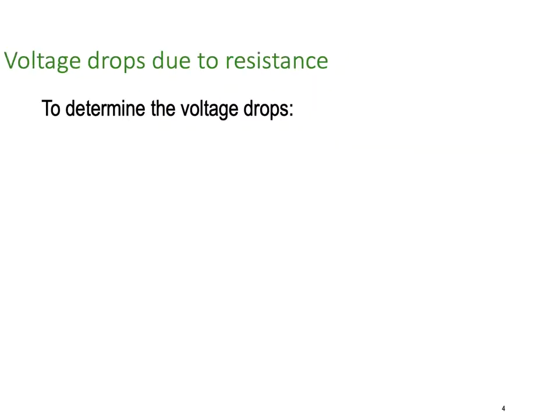Let's determine some of the voltage drops. To find the load current, assuming the voltage across the load is 400 volts, we use power equals volts times current. Our answer comes out at 100 amps because we simply take the power - 40,000 watts - divided by 400 volts, which gives us 100 amps.